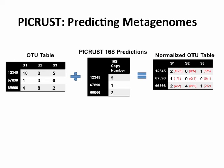PICRUSt does two major things. One is addressing the fact that some genomes have more than one copy of the 16S gene. Genomes sometimes have multiple copies — if you sequenced a community and a genome had four copies, that's going to be overrepresented four times more than a single-copy genome. Most people doing OTU tables don't worry about 16S copy number variation at all, which is kind of weird.